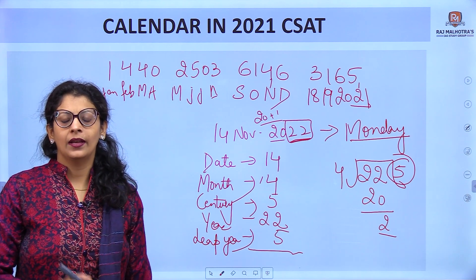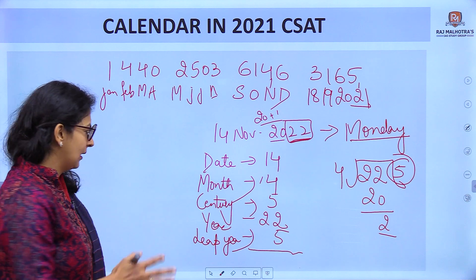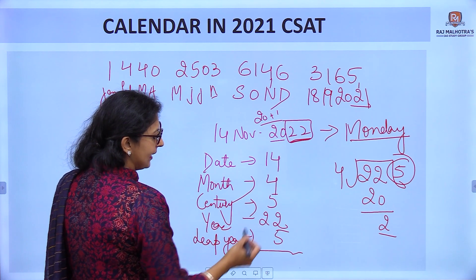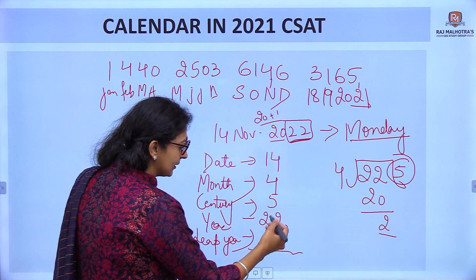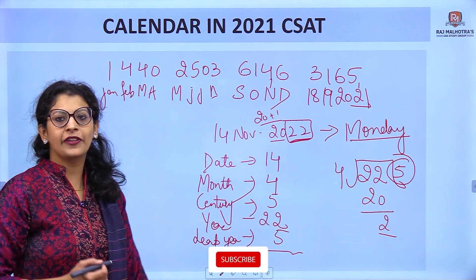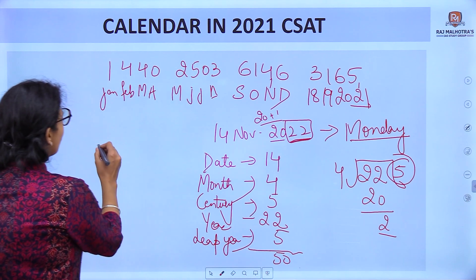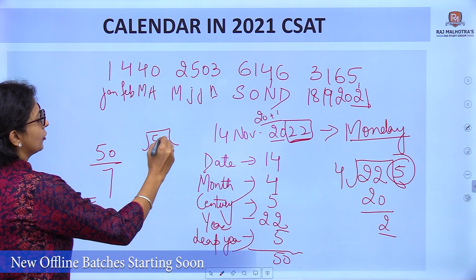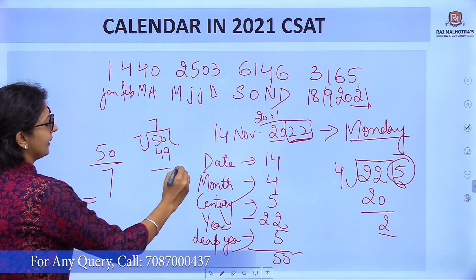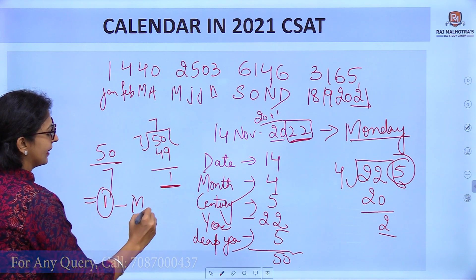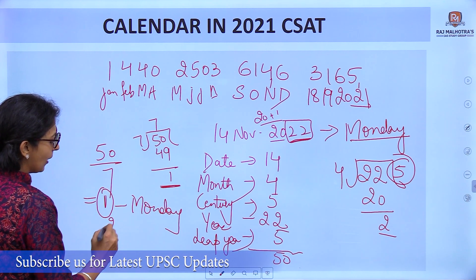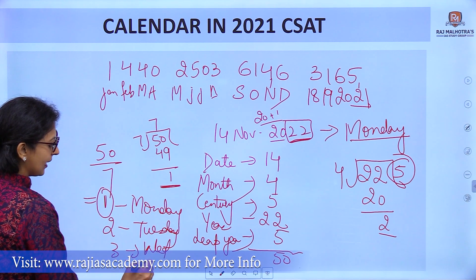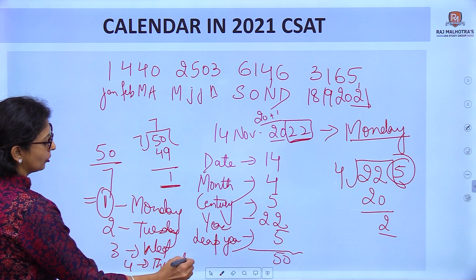Adding them: 14 (date) + 4 (month code) = 18; 18 + 5 (century code) = 23; 23 + 22 (year) = 45; 45 + 5 (leap year quotient) = 50. Now divide 50 by 7: 7 sevens are 49, remainder is 1. Remainder 1 means Monday — the first day of the week. If 2, it's Tuesday; 3, Wednesday; 4, Thursday. So today is Monday — answer is correct!